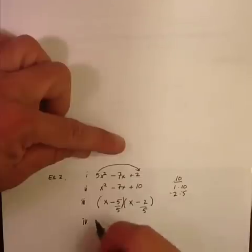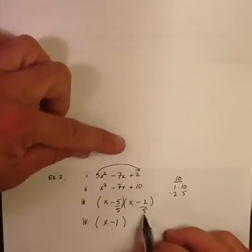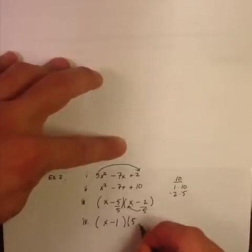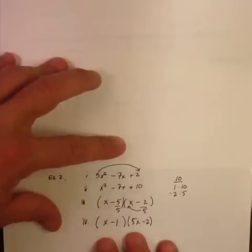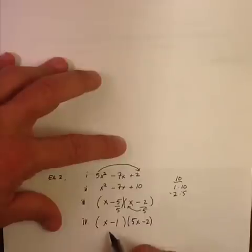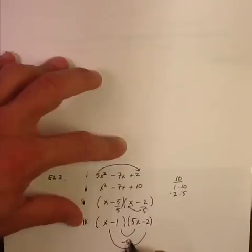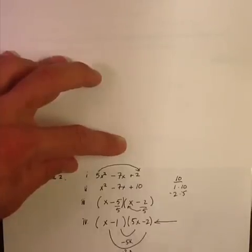Now you reduce. x minus 5 over 5 is just 1. This other one is already in simplest terms, so you bring the bottom up and you end up with 5x − 2. Let's check this with a smiley face: that gives me negative 2x, that gives me negative 5x. Add that up, you get negative 7x. Sure enough, there's your answer — that's the factored form.